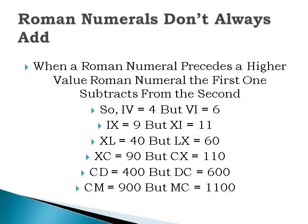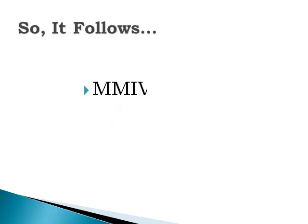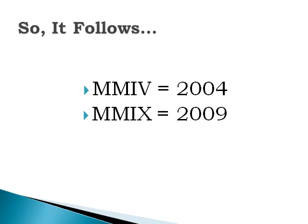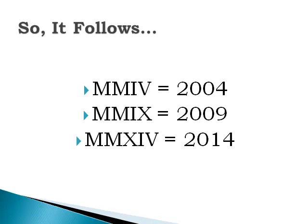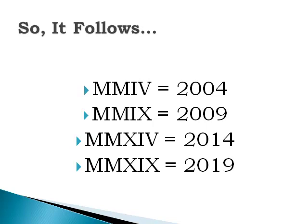CM equals 900, where 100 is subtracted from 1000. But MC equals 1100, because the C is smaller and adds to M. So it follows that MMIV equals 2004, MMIX equals 2009, MMXIV equals 2014, and MMXIX equals 2019.